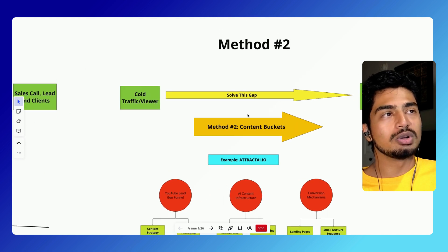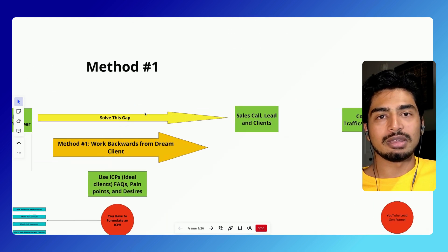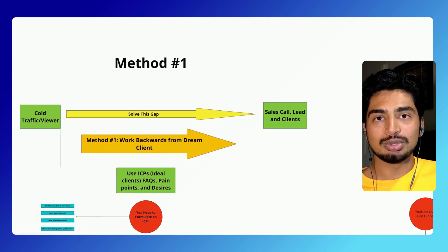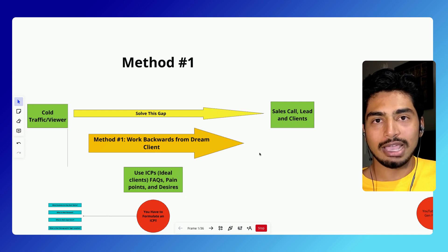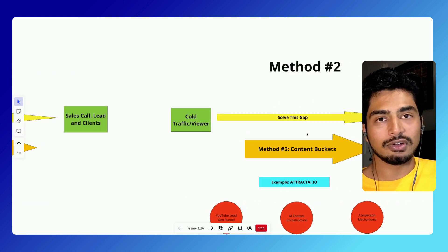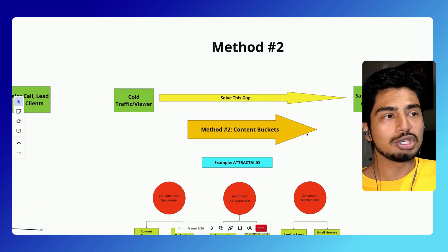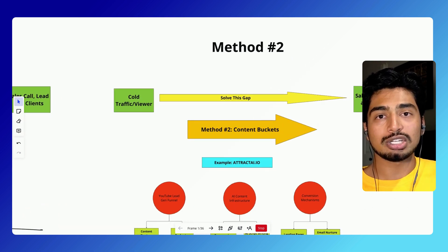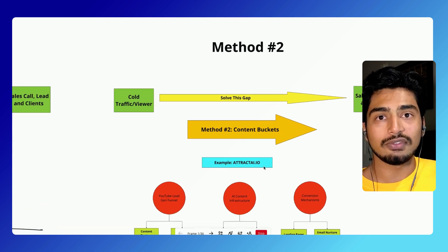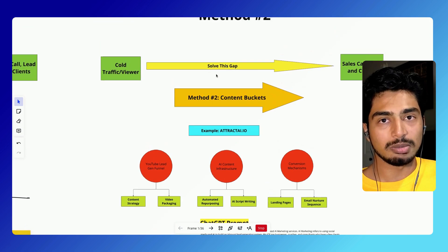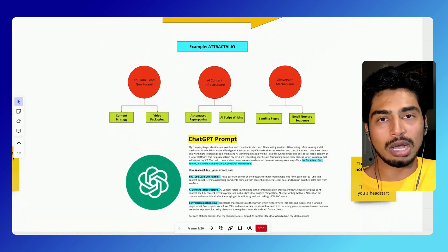Now we're going to move on to method two, which is a little bit different. In method one, we utilized AI to give us pain points of our dream clients and then used those pain points to come up with content ideas. Method two is a little bit different because we're going to be doing the exercise of content buckets, and we're actually going to be using AI to directly give us content ideas. As you can see, the ChatGPT prompt is a little bit bigger.